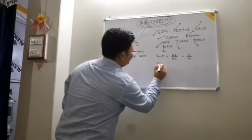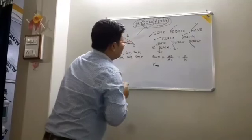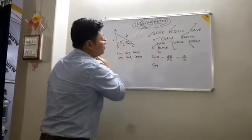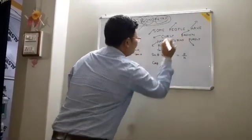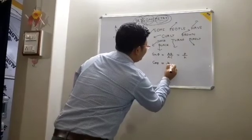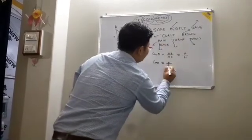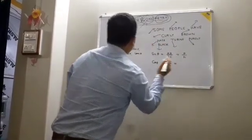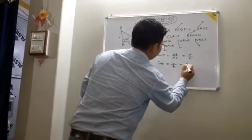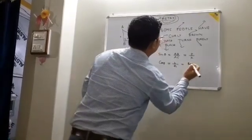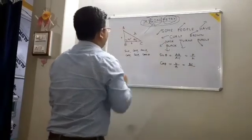Now comes cos theta. 'C' is for cos. Cos theta equals base by hypotenuse. So that is BC divided by AC.